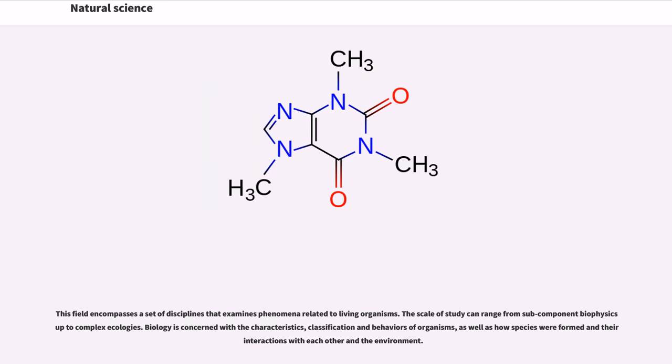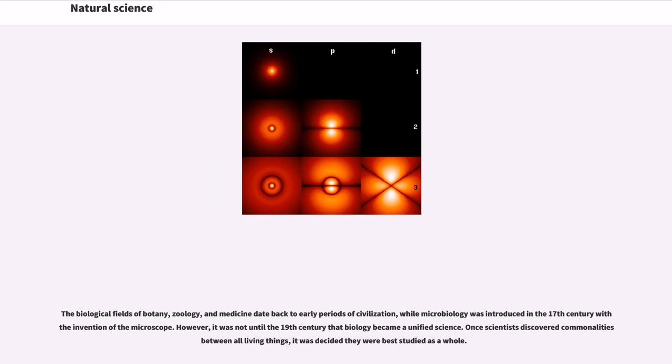This field encompasses a set of disciplines that examines phenomena related to living organisms. The scale of study can range from subcomponent biophysics up to complex ecologies. Biology is concerned with the characteristics, classification and behaviors of organisms, as well as how species were formed and their interactions with each other in the environment. The biological fields of botany, zoology, and medicine date back to early periods of civilization, while microbiology was introduced in the 17th century. However, it was not until the 19th century that biology became a unified science.